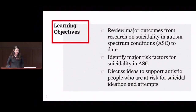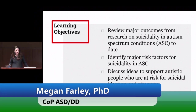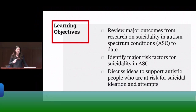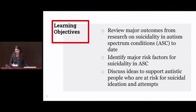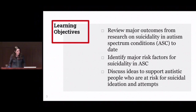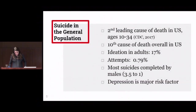I don't have any conflicts. Our learning objectives: we're going to review major outcomes from research on suicidality and autism spectrum conditions — a preferred term for many people. There's a little bit of research prior to 2014, but in 2014 there was a really important study that launched this field, so it's not a very old area of research in the world of autism.